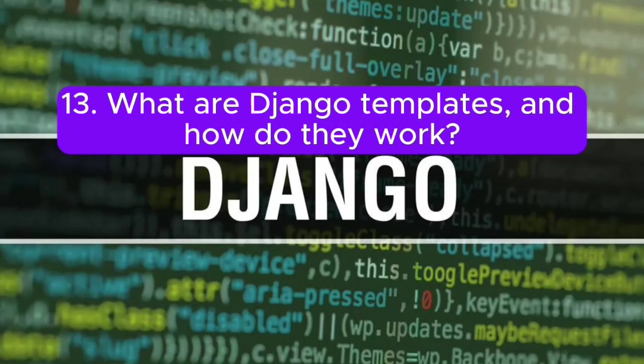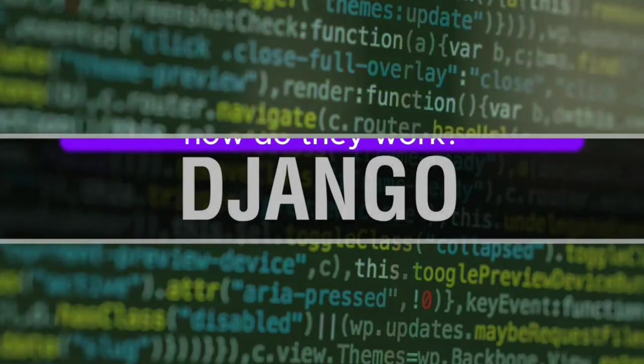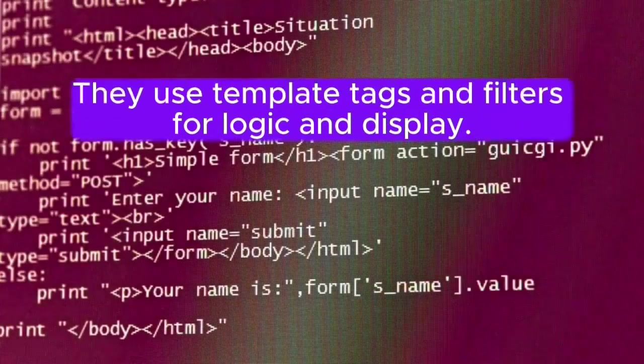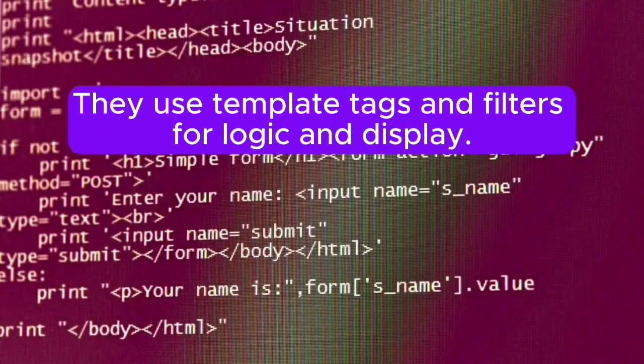Question 13: What are Django templates, and how do they work? Answer: Django templates are HTML files that contain placeholders for inserting dynamic content. They use template tags and filters for logic and display.